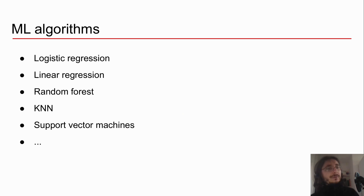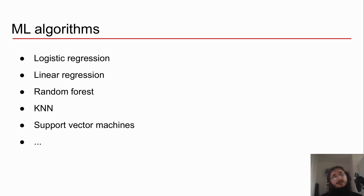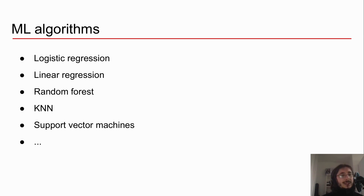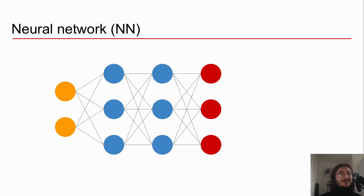Machine learning itself has a bunch of different algorithms — there are really a ton of them. Some of the most popular are logistic regression, linear regression, random forest, KNN or K-nearest neighbor, and support vector machines. And obviously another algorithm that's very fashionable right now is neural networks, or artificial neural networks.